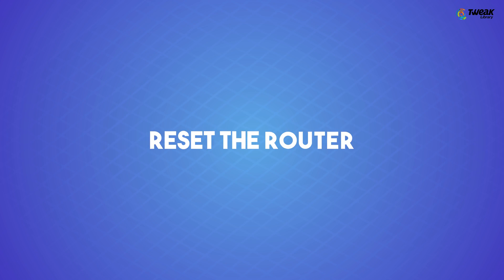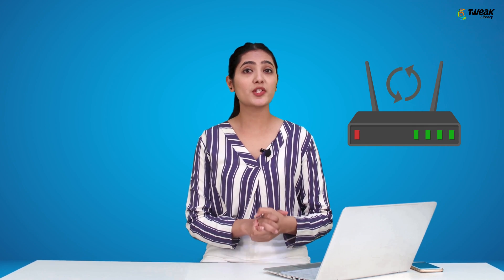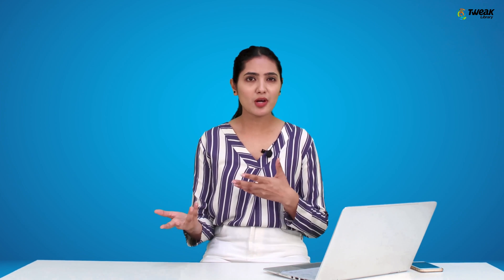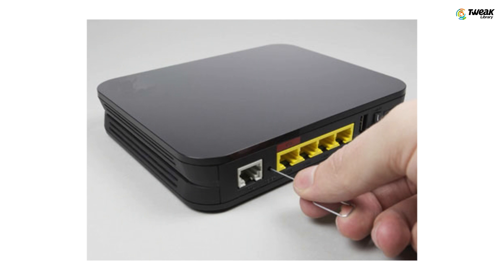If not, reset the router. Something as simple as resetting the router can help you fix the no internet secured error. Different routers can be reset differently. In most cases, you just have to locate the reset button, use a pointed object to hold it for a few seconds, and then power it back on.